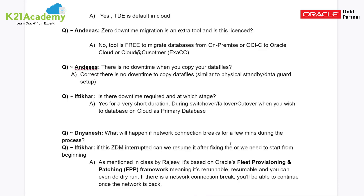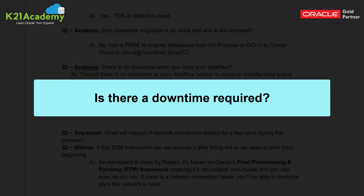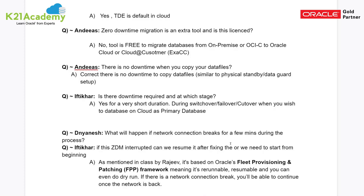Iftikar asked whether downtime is required and, if so, at what stage. The answer is yes — a short downtime is required during switchover, failover, or cutover. Switchover is where on-premise is primary and cloud becomes standby, then the roles switch so cloud becomes primary. Failover means you ignore the primary and make the standby the new primary. The actual cutover downtime is just a few minutes while the role changes, though additional application steps could extend this slightly.